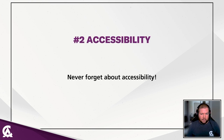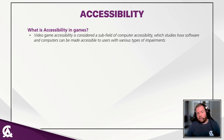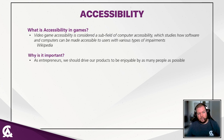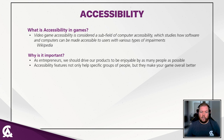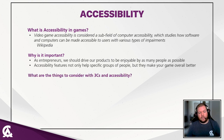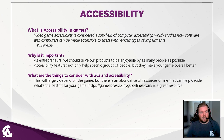The final point I'd like to talk about is accessibility. Never forget about accessibility. Video game accessibility is considered a subfield of computer accessibility, which studies how software and computers can be made accessible to users with various types of impairments. Why is it important? As creators, we should drive our products to be enjoyable by as many people as possible. Accessibility features don't only benefit specific groups — they make your game overall better. A great resource is gameaccessibilityguidelines.com.